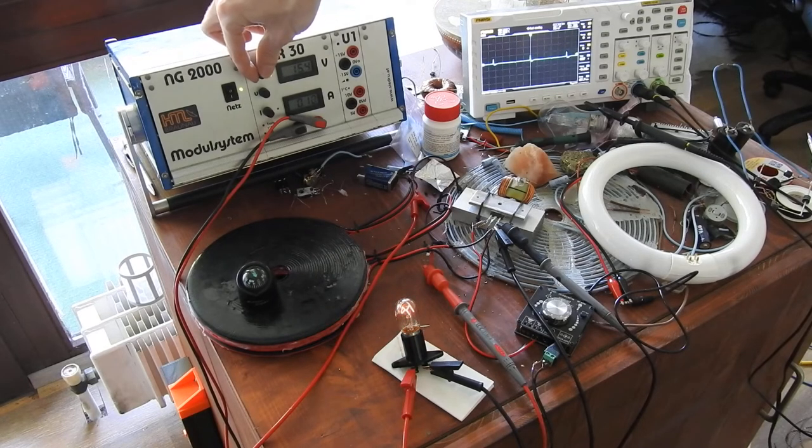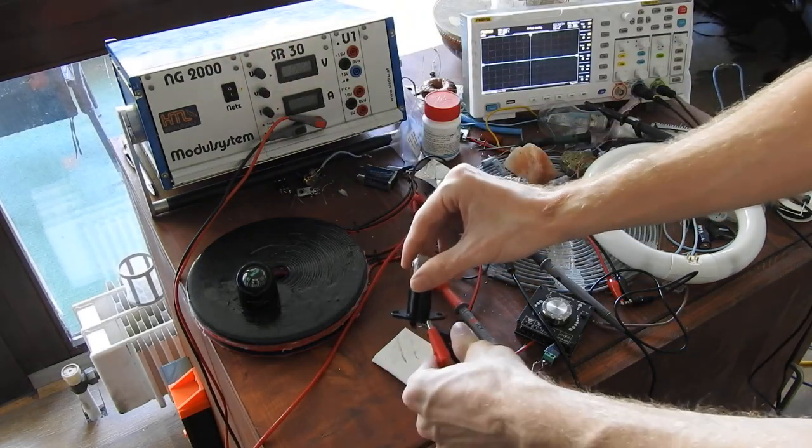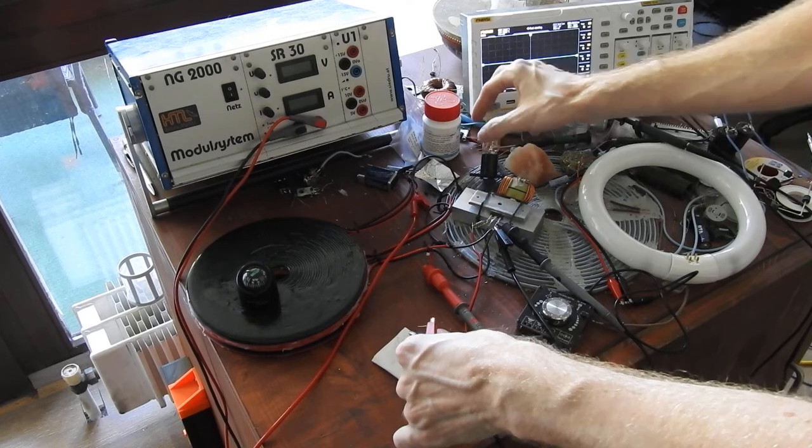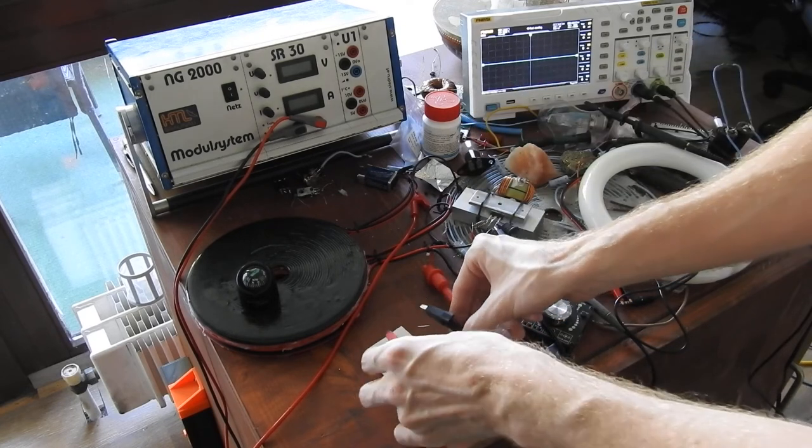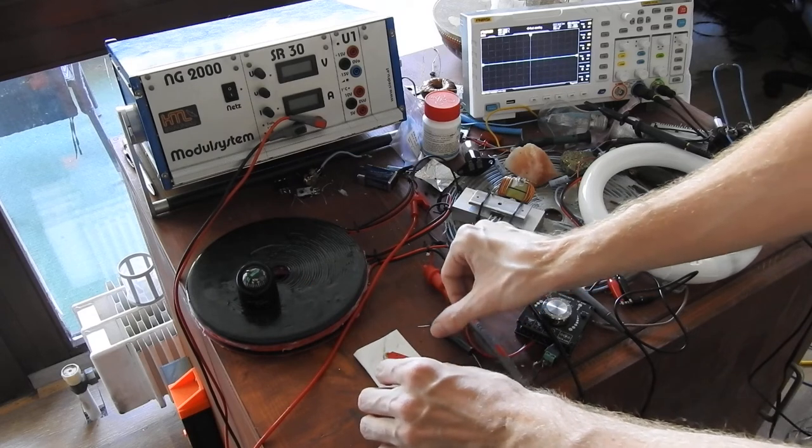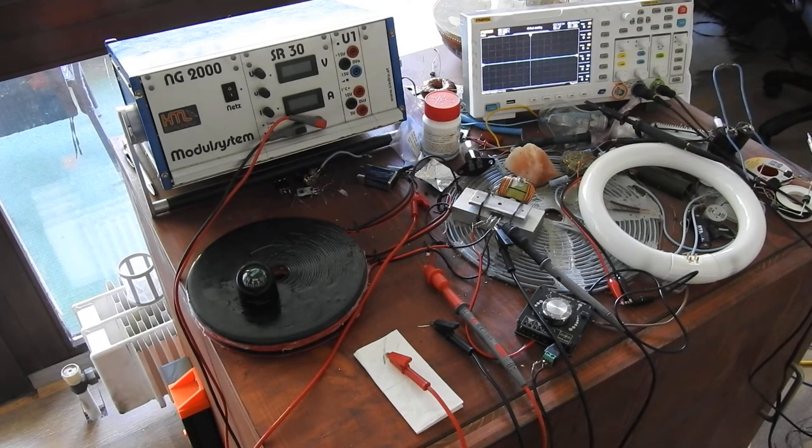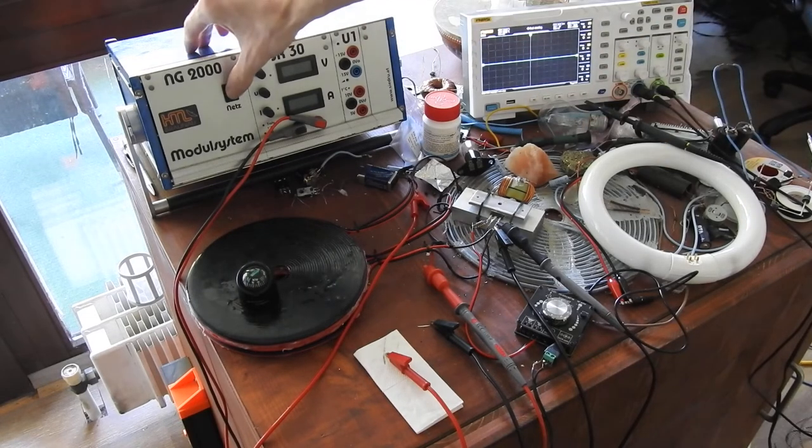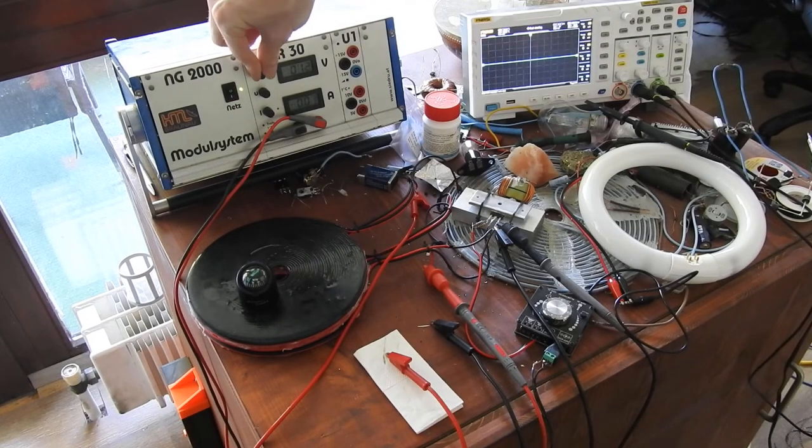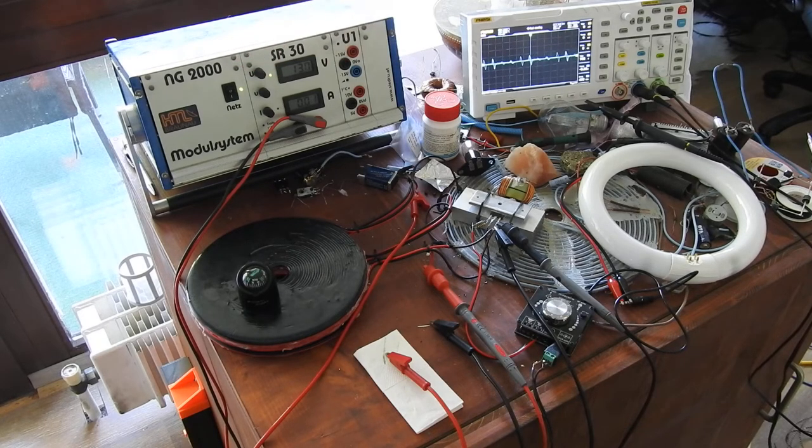And now, comes the part where I will show you what happens if I don't connect anything to my high voltage transformer. Meaning, I let this output, high voltage output and ground, unconnected to anything, and we have an open circuit. And then, it behaves quite differently. I will show you what I mean. So, I will use 13 volts as input.